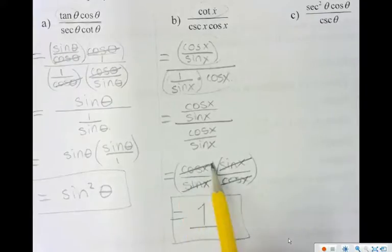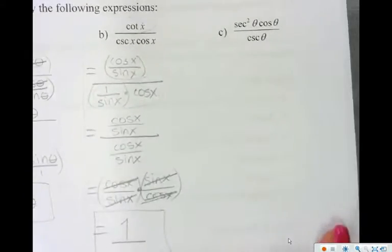For here, this cos on the top reduces with the cos on the bottom. Okay, so now let's go on to part c.